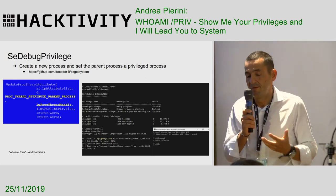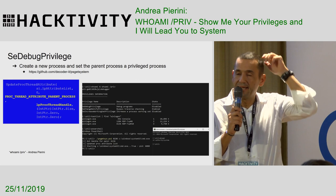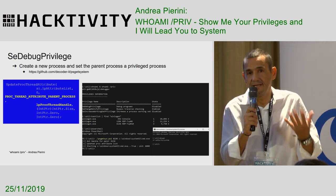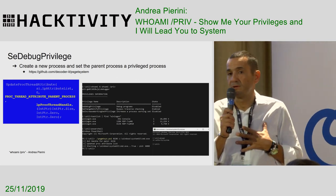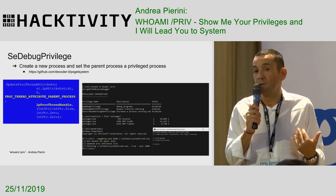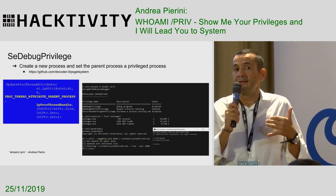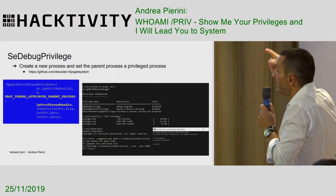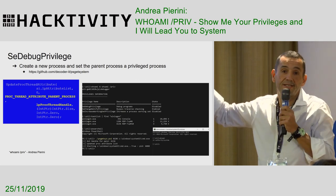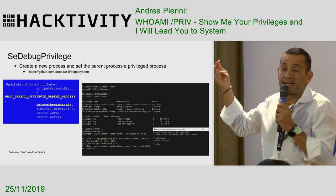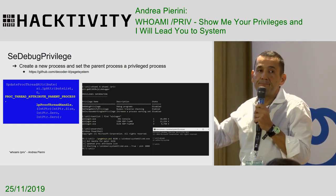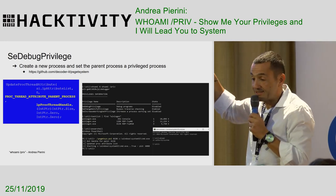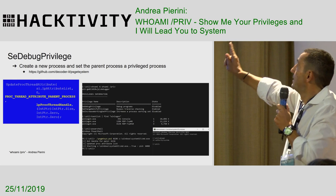Another interesting way to exploit the debug privilege, without making it too complex with creating remote threads, is simply setting the parent process: creating a process and setting the parent process of my process to a privileged process. In this manner, I will impersonate the user who is the owner of the parent PID. There are many simple API calls to do this. I wrote some time ago a PowerShell script — you can find it on my GitHub — which does exactly this: sets the parent process to a privileged process, and as you can see in the screenshot, a simple user becomes system.